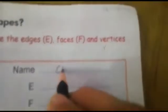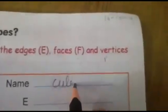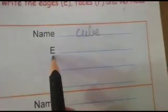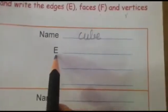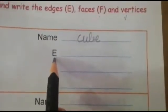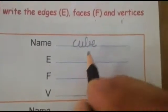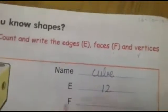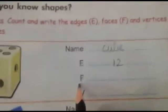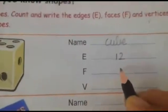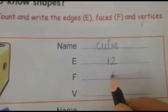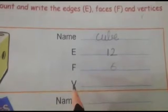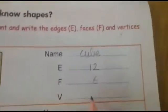This is a cube. We will write here: cube. Now E for edges — how many edges are there? 12. Yes. F for faces — how many faces are there? 6. And vertices are 8.